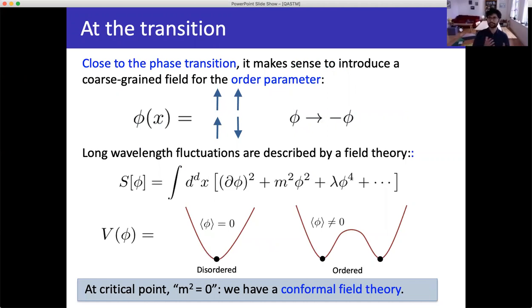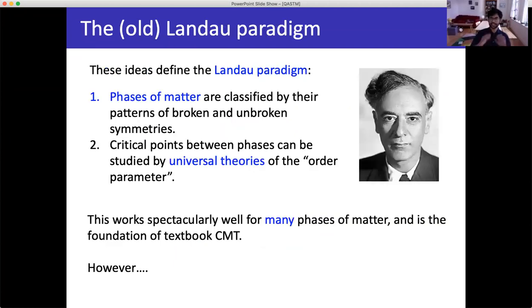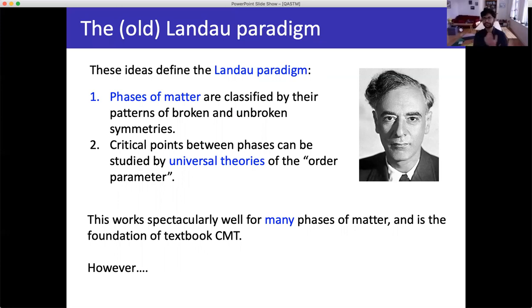The point is that you can study phase transitions with a continuum field theory. This continuum field theory describes long-wavelength stuff and doesn't know about details of the microscopic theory. These ideas describe the Landau paradigm for the classification of phases of matter: phases are classified by their patterns of broken and unbroken symmetries, and critical points can be studied by universal theories like this one for the order parameter field. This works spectacularly well for many phases of matter and is the foundation of textbook condensed matter physics.